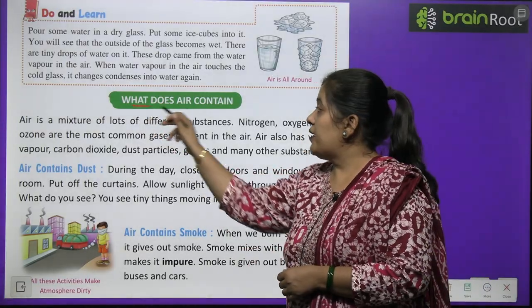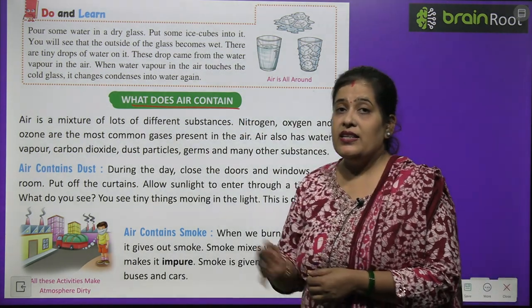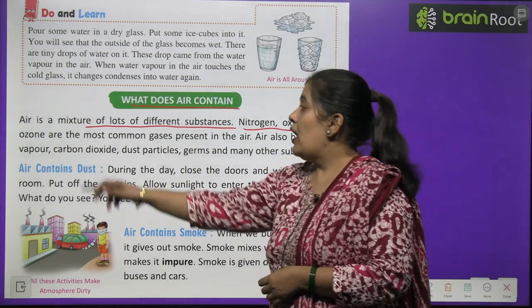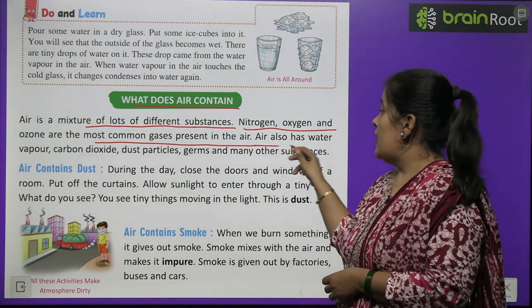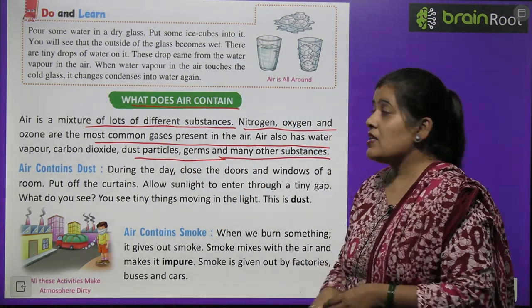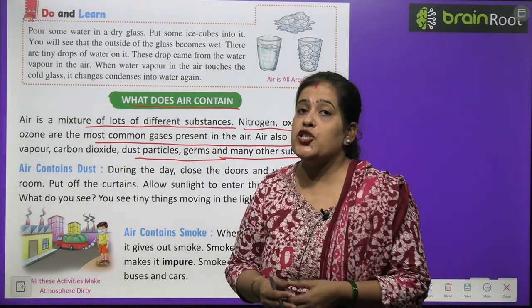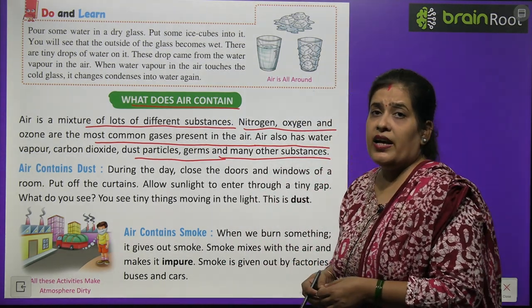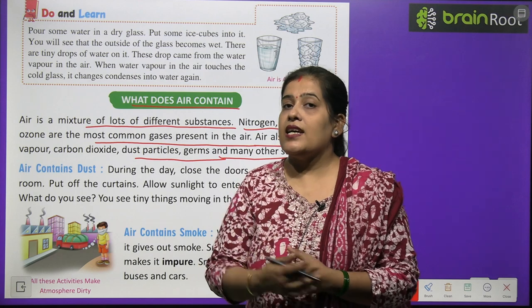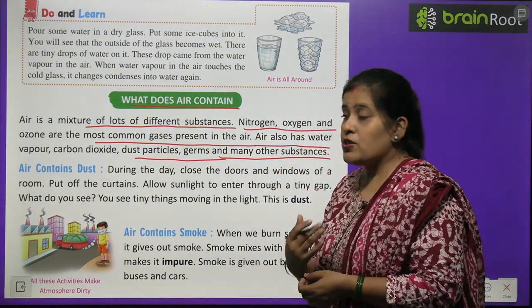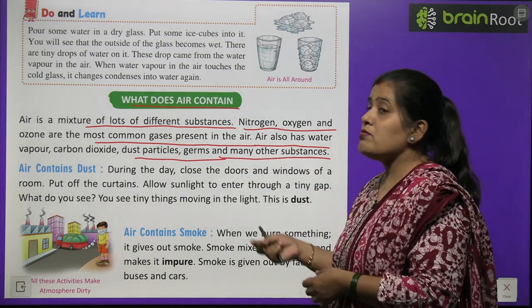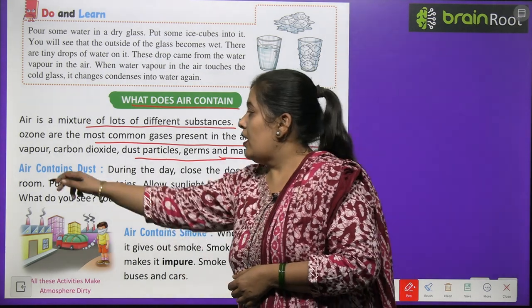Now we will learn what does air contain. Air is a mixture of many different substances. Nitrogen, oxygen and ozone are the most common gases present in the air. Air also has water vapor, carbon dioxide, dust particles, germs and many other substances. Oxygen saans lene ke liye use hoti hai. Hava mein water vapor bhi hoti hai, carbon dioxide bhi hoti hai aur bahut saare germs aur other substances bhi paaye jaate hain.